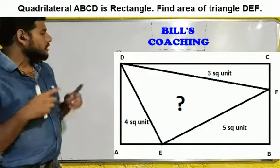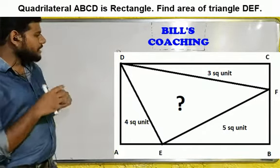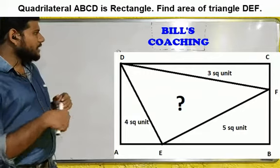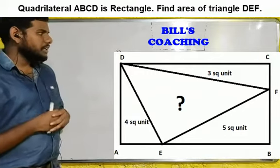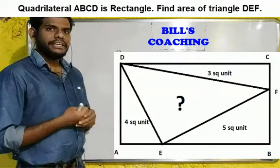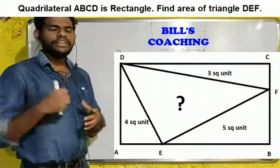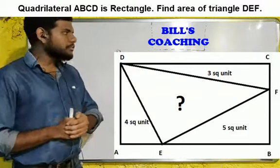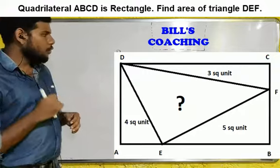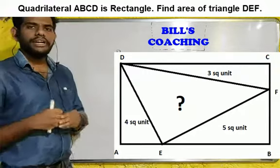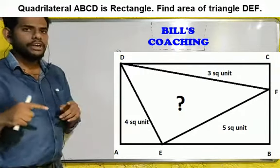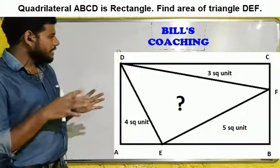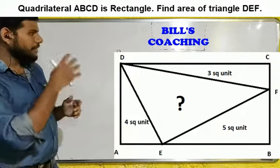As you can see, only one rectangle is given — rectangle ABCD — and within that rectangle, the areas of three triangles are already given: 3, 4, and 5. We need to find the area of the middle triangle, which is DEF.